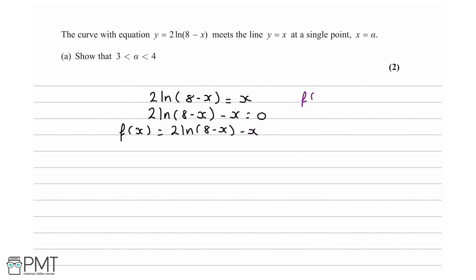What we need to do is prove that f(3) and f(4) have a different sign. Let's solve it. f(3) equals 2ln(5) minus 3 equals 0.22, which is positive. f(4) equals 2ln(4) minus 4 which equals -1.23, which is negative. I'm writing this so the examiner knows clearly that we know f(3) is positive and f(4) is negative.